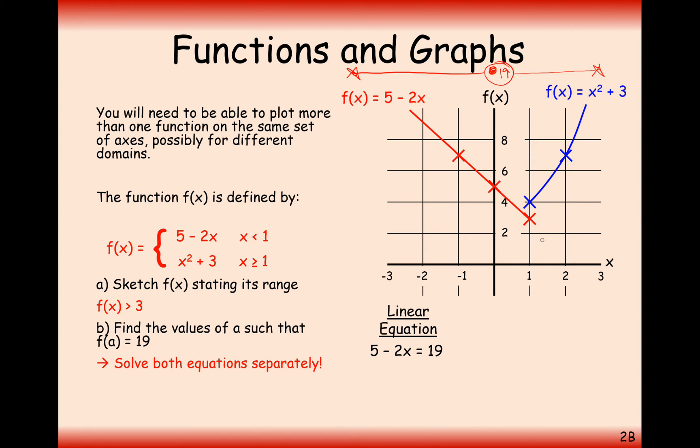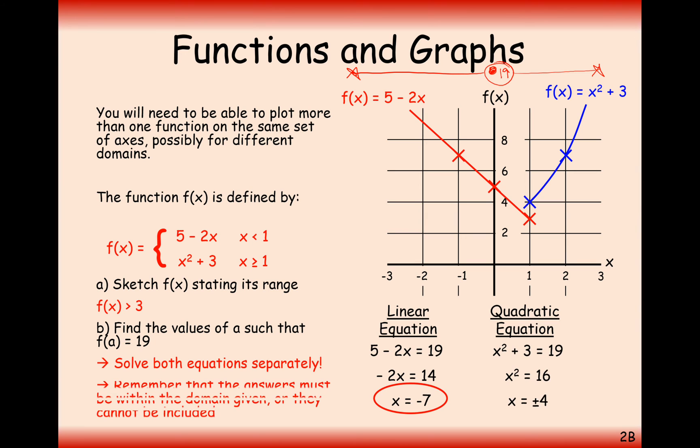Solving separately this linear intersection point with 19 is going to be when x is minus 7. And for the x squared graph we're going to get plus minus 4. But hold on, with this x squared graph here it's only when x is bigger than 1, not when x is negative 4. Because when x is negative 4 it doesn't belong to this equation here, it belongs to this equation here. So what you would do is you'd only take the x equals 4 solution from this question here.